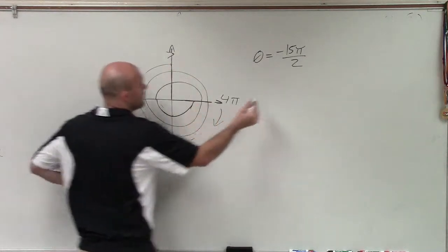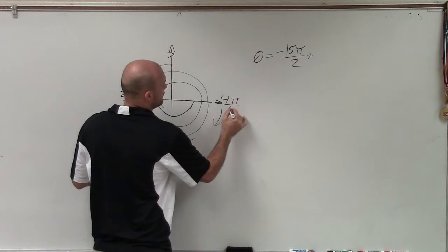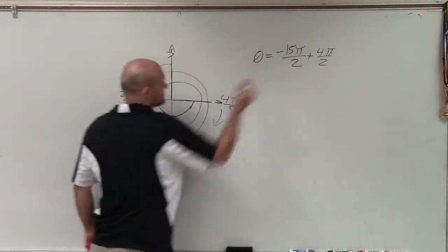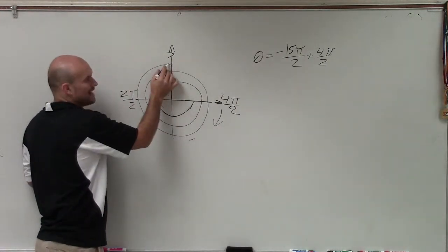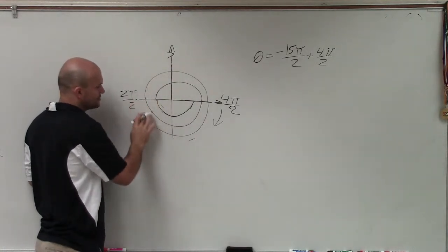So we'll add 2 pi once. And remember, 2 pi, we're going to represent as 4 pi over 2, because they have the same denominator. However, that's one angle. But that's not really the smallest negative angle, right? I can add 2 pi again.